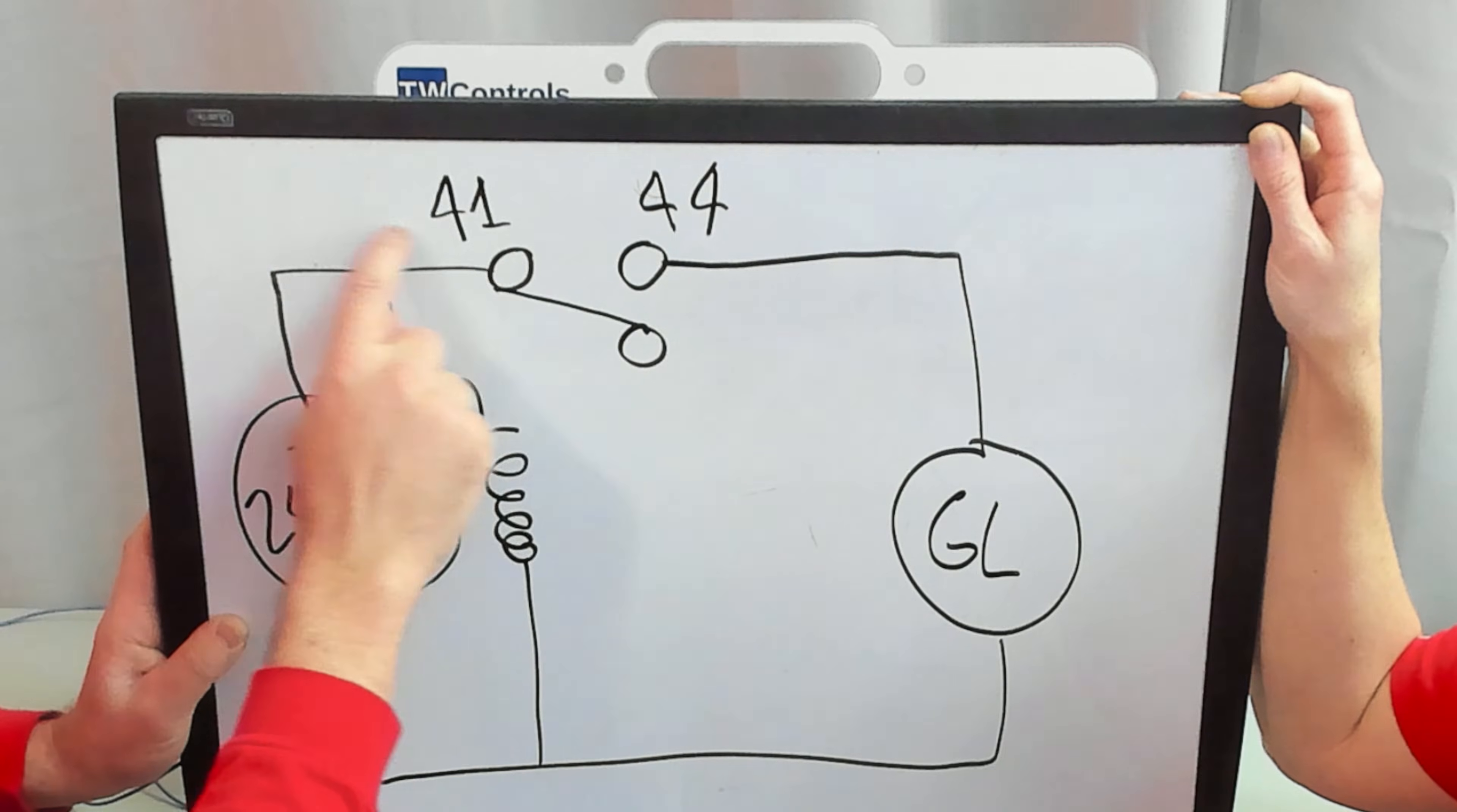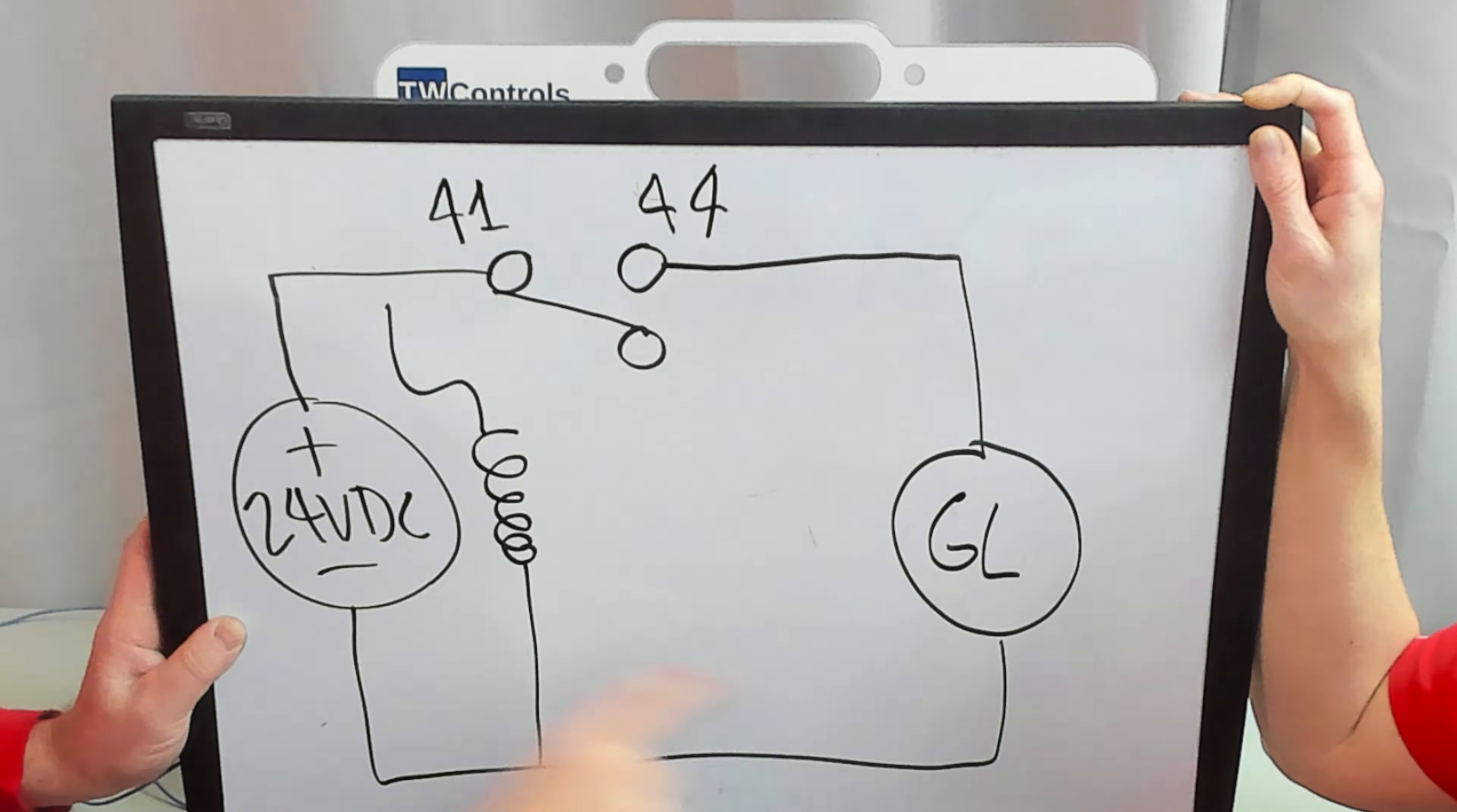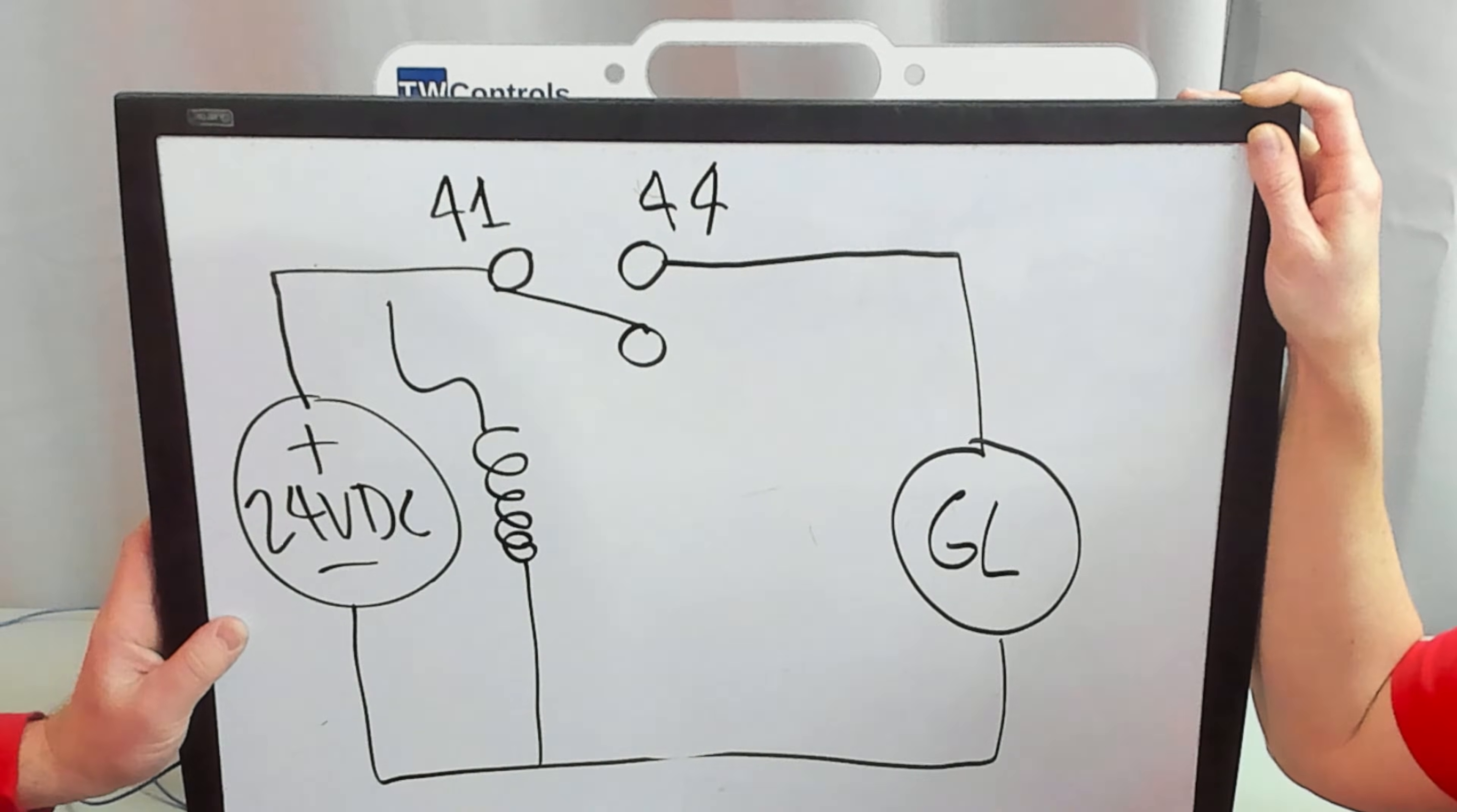We're going to take that same 24 to 41. Then we're going to take 41 onto our green light. And then we will take the other side back to the minus. Amazing.